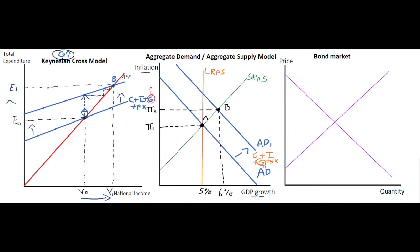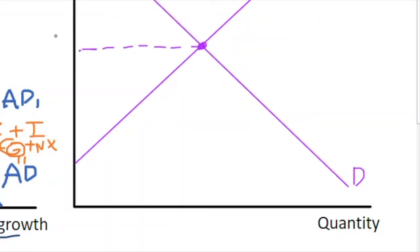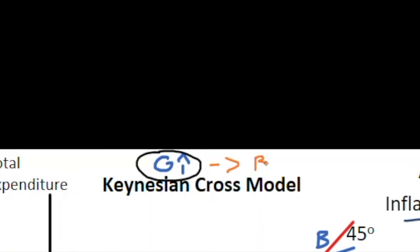The issuance of these bonds causes government debt to increase in the economy, and they impact the bond market. In the bond market we have the demand for bonds represented by investors and big pension funds, and we have the supply of bonds. Demand and supply in equilibrium give you the price level for a bond in the market and the quantity demanded and supplied. If the government's extra expenditure is financed by the issue of bonds and national debt increases, then the supply of bonds increases on the market.